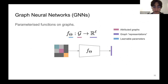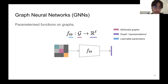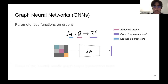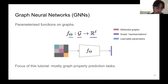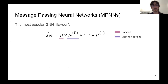Graph neural networks are parameterized functions on graphs — they model functions with attributed graphs as domain and some real vector space as co-domain. They have learnable parameters theta. They can solve problems related to node prediction, graph property prediction, or link prediction. In this tutorial our focus is on graph property prediction.